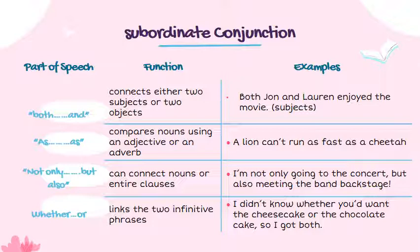'Both/and' connects either two subjects or two objects. Example: 'Both John and Lauren enjoy the movie.' It connects two subjects — John and Lauren. 'As/as' compares nouns using an adjective or adverb. Example: 'A lion can run as fast as a cheetah.' The two nouns being compared are lion and cheetah, connected through 'run fast' — the adjective and adverb 'fast' being compared.